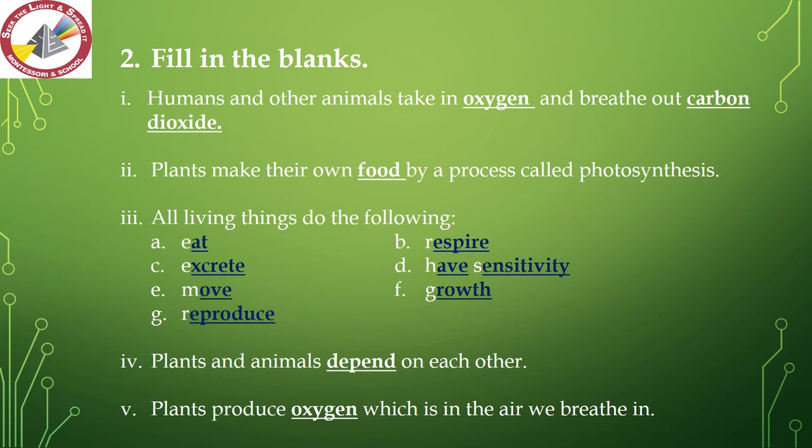Number 3 — all living things do the following. Write the correct characteristic for each letter given: A — eat, B — respire, C — excrete, D — have sensitivity, E — move, F — growth, G — reproduce. Number 4 — plants and animals depend on each other.